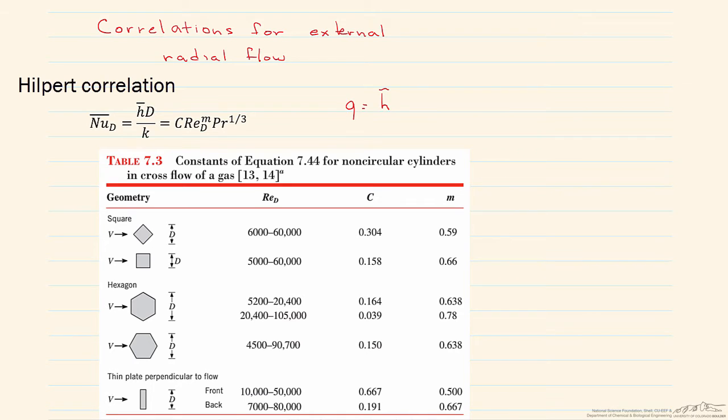We need to use Newton's law of cooling, which involves that h bar, or that convective heat transfer coefficient. The bar over the h indicates that it's an average heat transfer coefficient. So in order to get that h bar, we need a Nusselt number, and Nusselt numbers are found through different empirical correlations.